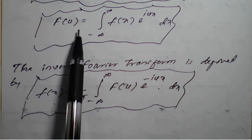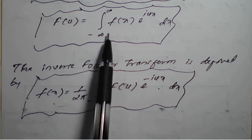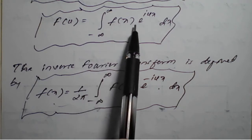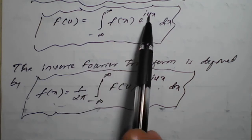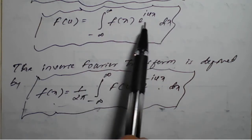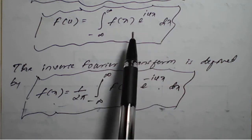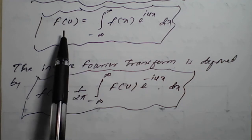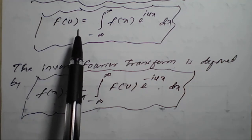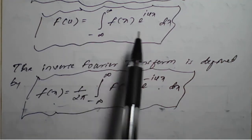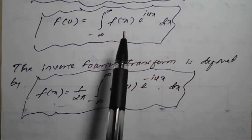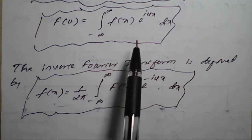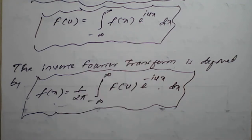For F of u, the Fourier transform integral from minus infinity to plus infinity of f of x, e raised to i u x, dx must exist. If it exists, we can get a result as a function of u. We need to remember that the integral must exist for the transform to be possible. These are the formulas for the infinite Fourier transform.